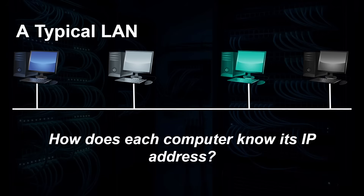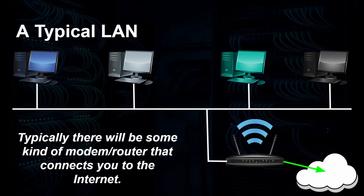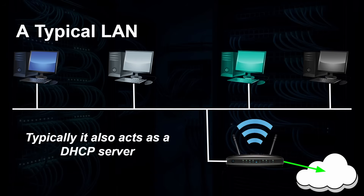If a device doesn't have an address, it wants to get one. There will typically be on your network some kind of modem or router that connects you to the internet through your ISP. The good news is it also acts as a DHCP server. So as long as you've got your router and you're connected, it will automatically serve DHCP services to the rest of your network — which means you buy a laptop, plug it in, and it just works.